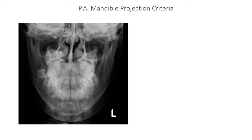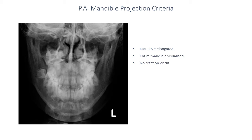You should end up with a projection where the mandible has been elongated, and if there is a fracture, hopefully there won't be any superimposition of the proximal and distal fragment sections over each other, so you should be able to see that fracture. The superior-most parts of the temporomandibular joints will be superimposed by the lower facial bones and temporal constructs, and the midline mental symphysis will be superimposed over the cervical spine. However, we should be able to see the entire mandible as a fairly symmetrical structure.